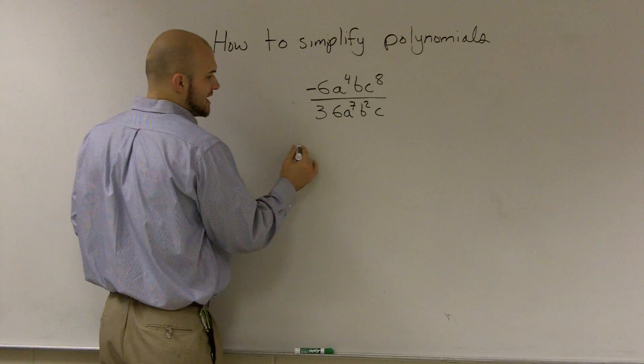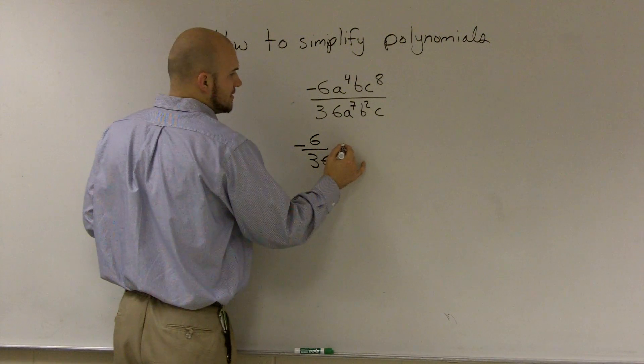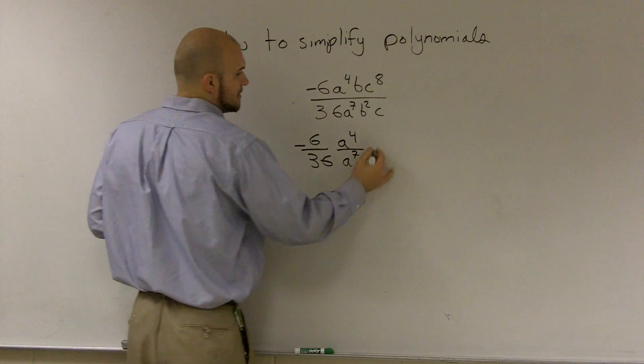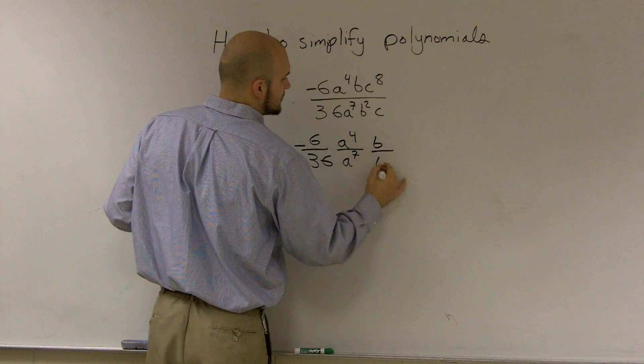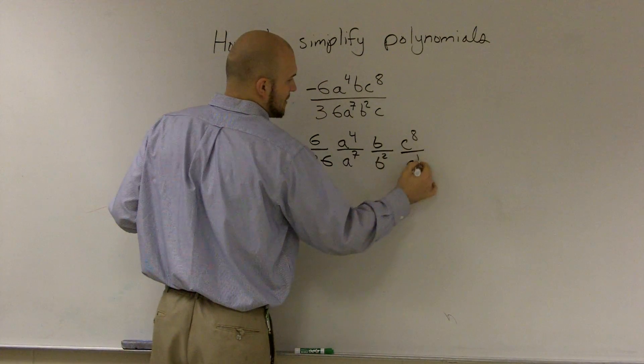So the first thing we do is I'm going to break out a negative 6 over 36. I have an a to the 4th over a to the 7th. I have a b over b squared. And I have a c to the 8th over c to the first power.